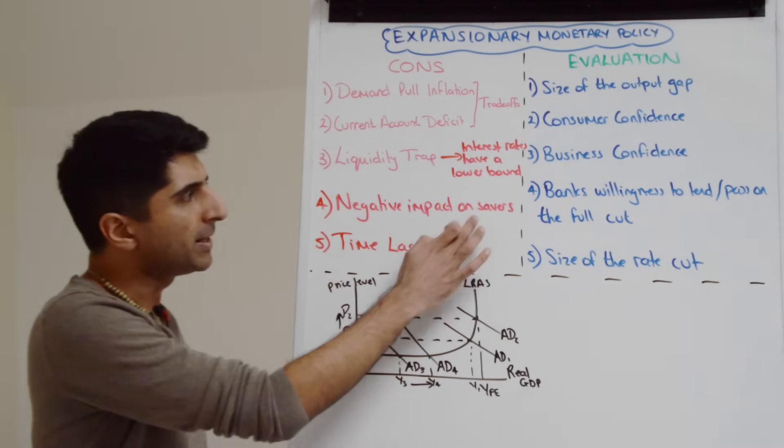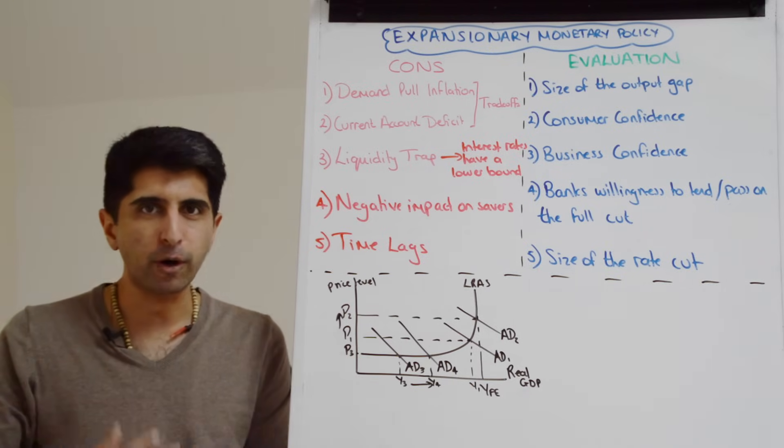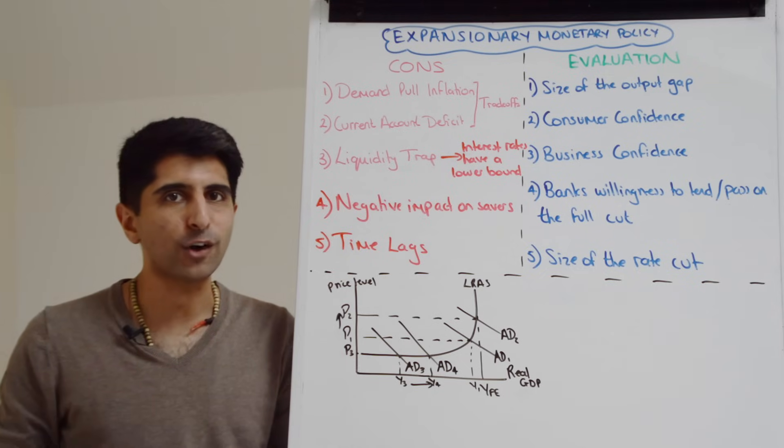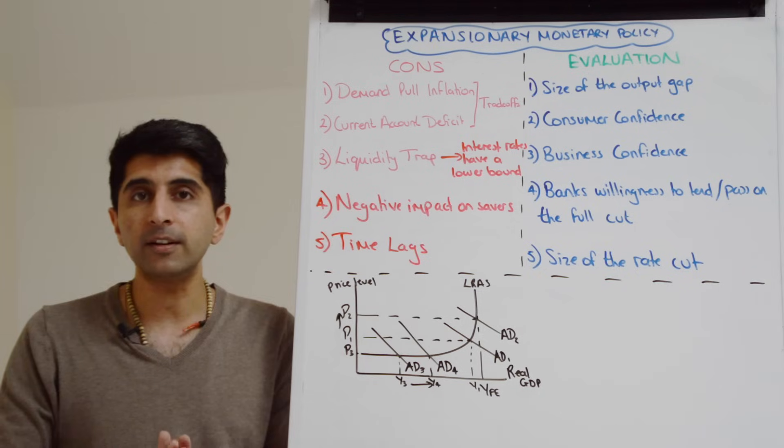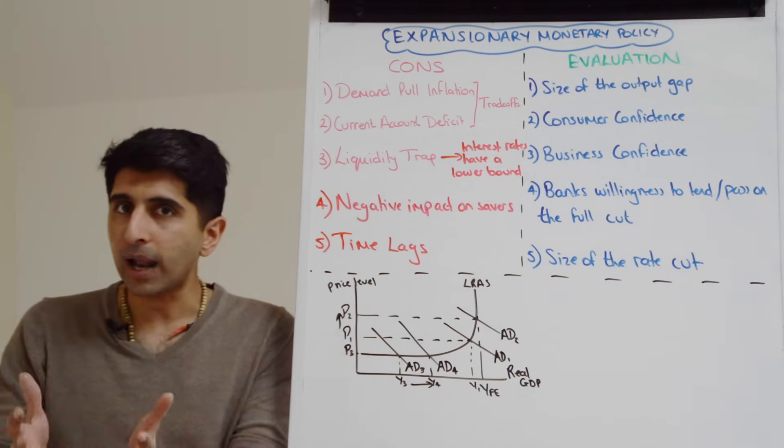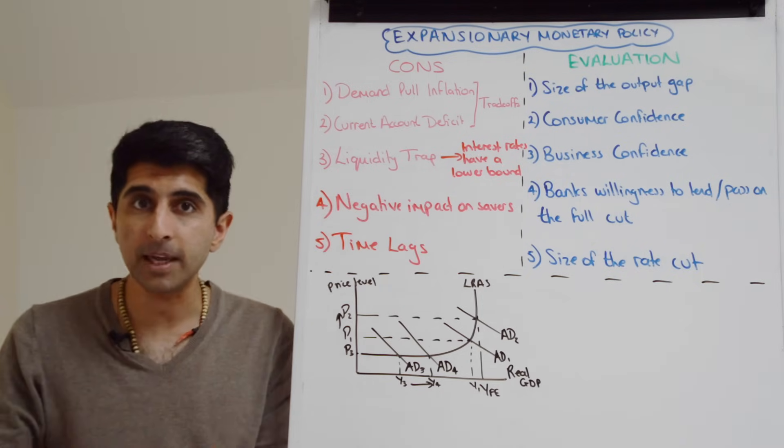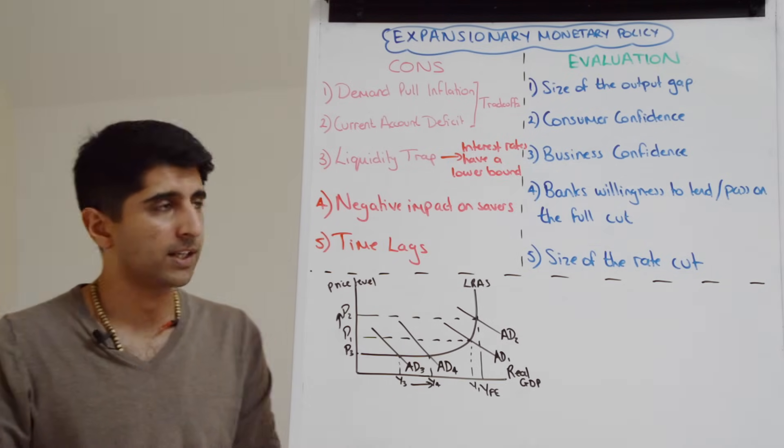But deeper, the incentive when interest rates are cut are not to save, instead it's to borrow and spend. And if that means that we see less and less savings in the economy, that's a big risk that households are taking. What if for whatever reason people are made unemployed and they don't have the savings as a safety net to help them? What happens? Their living standards are going to fall off a cliff, they might be homeless. So this is not the kind of incentive we want to be promoting in the economy, to completely destroy the incentive to save.